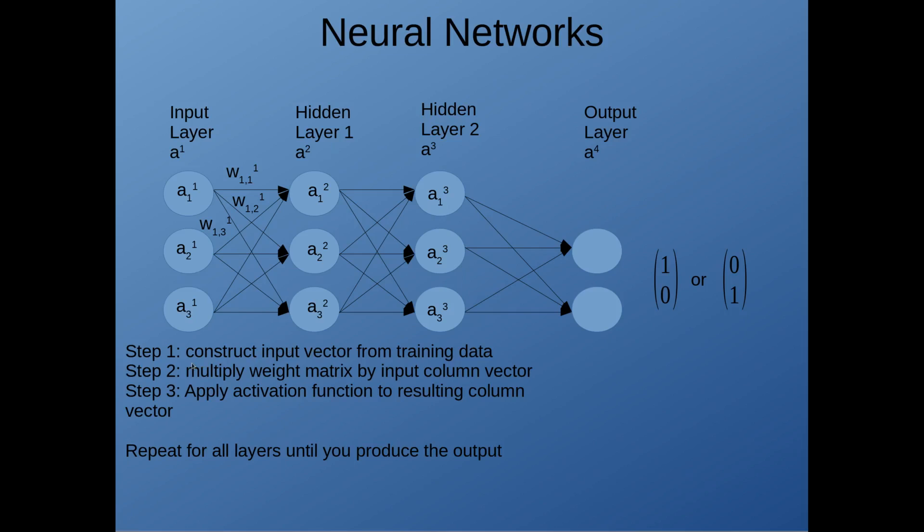So here, the steps for the algorithm are to construct the input vector from your training data. Step two is to multiply the weight matrix by the input column vector. So you basically perform this operation here and apply the activation function to get your first hidden layer. And then repeat this process for the second hidden layer until you get to the output.